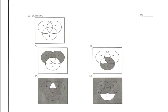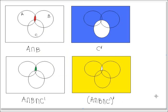Problem 33: (A∩B∩C')'. First, compute A∩B — the common part between A and B — shown as the red part. Next, C complement is everything completely outside C, shown as the blue part.